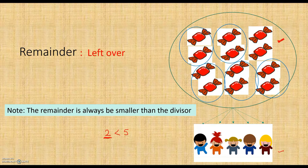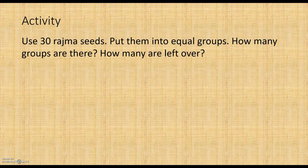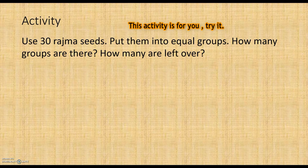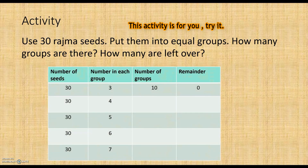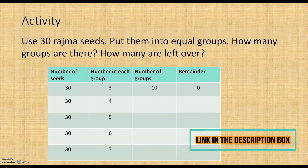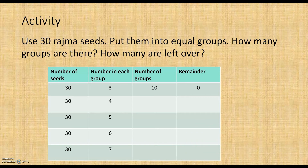Now let's move to the activity. For this activity you need 30 rajma seeds, and you have to put them into equal groups. Then find out how many groups there are and how many are left over. A table is given, so according to the table you can find the answer. The link for this activity sheet and worksheet is given in the description box, so you can check it there.